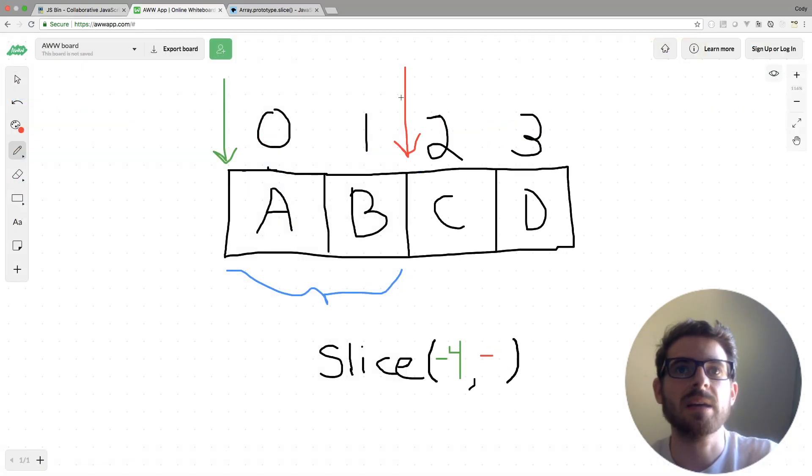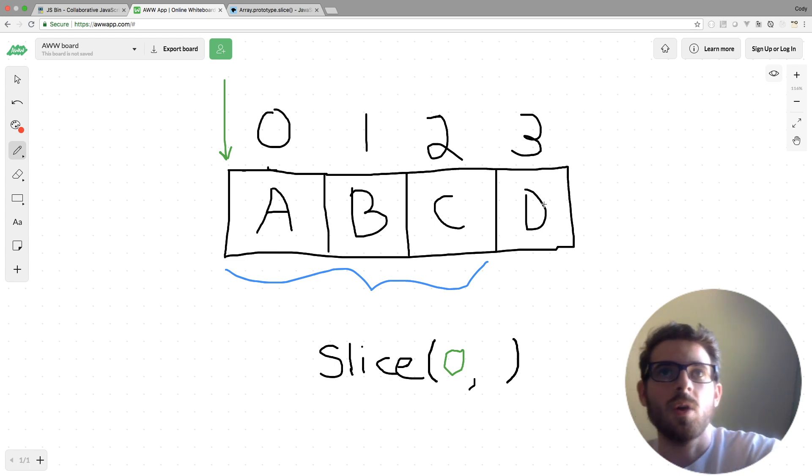All right, so let's demonstrate one last example. Let's say we wanted to grab ABC, and we wanted to not include the very last element of our array. What we could do is, again, do a slice at index zero. So index zero would be here. We're shooting for ABC. And then what would we need to do for the second argument to make sure that we don't include D? Well, we could do three, or we could just do negative one.